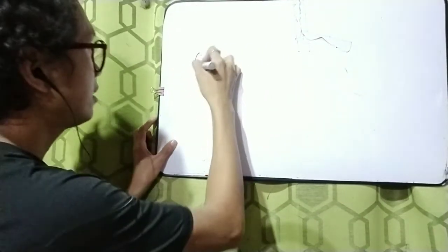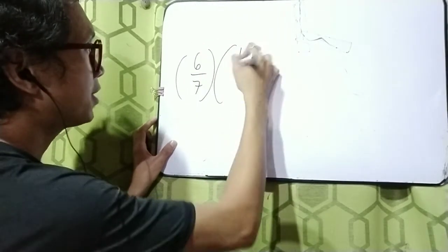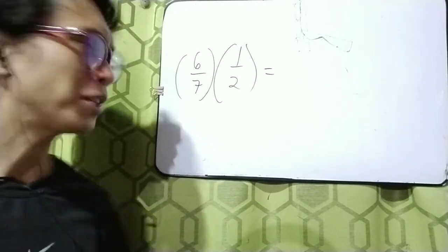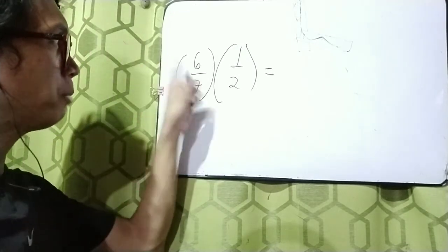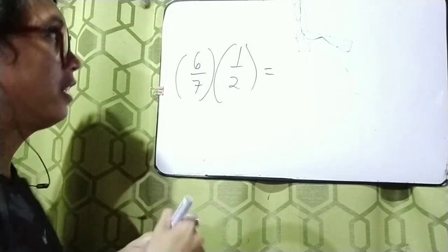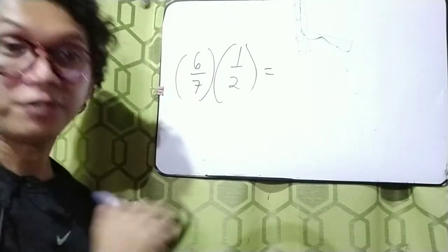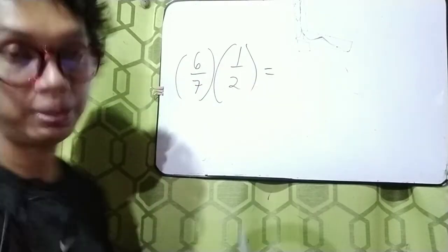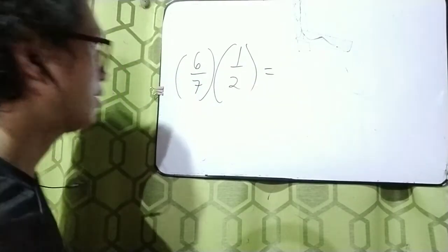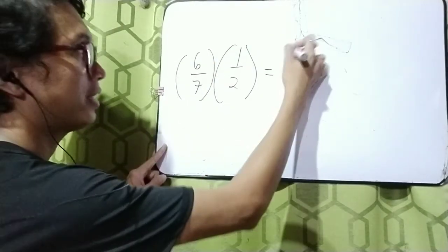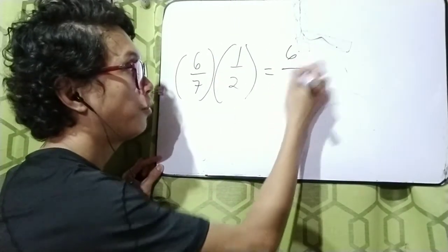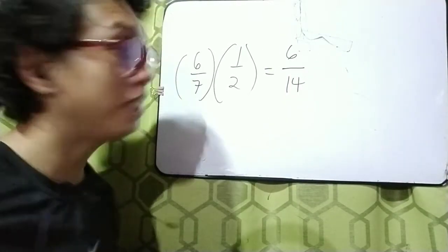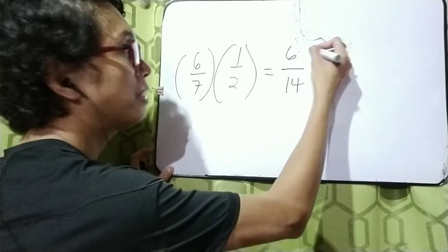That is 6 over 7 times 1 half. This is very easy, right? Again, the rule is multiply the numerator to the other numerator and the result will be the numerator of the answer, and multiply the denominator to the denominator for the denominator of the answer. So 6 times 1 is 6, and 7 times 2 is 14.